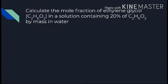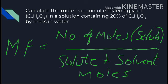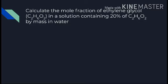Next question: calculate the mole fraction of ethylene glycol in a solution containing 20% ethylene glycol by mass in water. Mole fraction formula: mole fraction of ethylene glycol = number of moles of ethylene glycol / total number of moles. Total moles includes both ethylene glycol and water. Since 20% by mass means 20 grams of ethylene glycol dissolved in 80 grams of water.